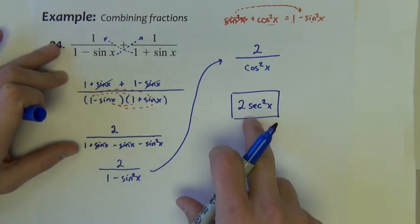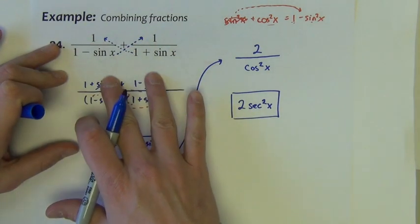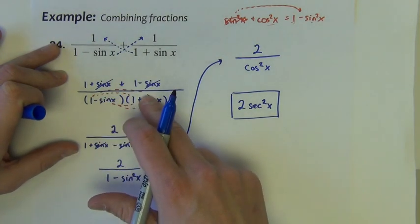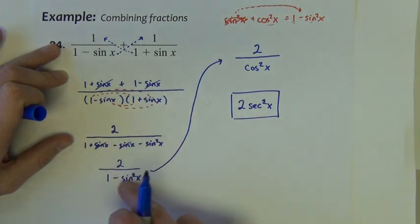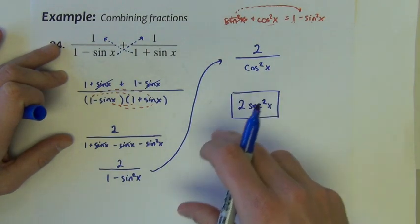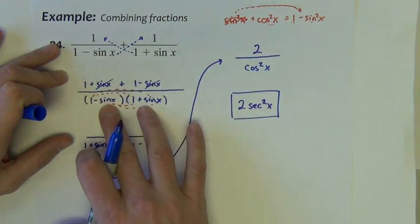That's probably about as simplified as we're going to make this expression look. And certainly, you'd probably agree that this is simpler looking than this. But again, the opening move, the thing that gave us something to do, gave us the foil, gave us the like terms, gave us the Pythagorean identity, gave us the reciprocal identity. The thing that got us going was to combine these two fractions to make a common denominator.